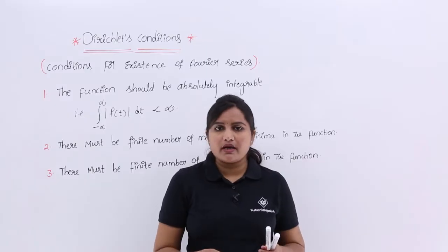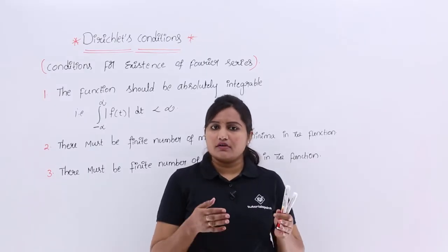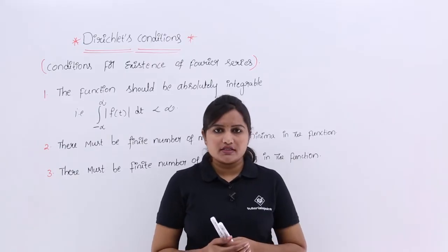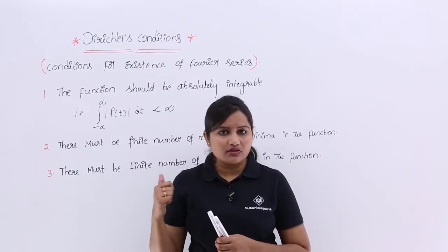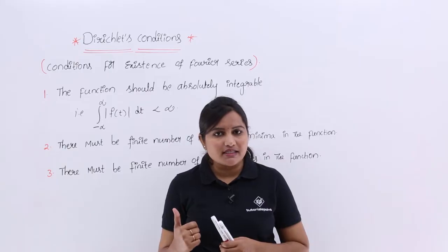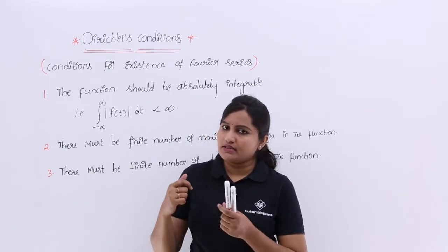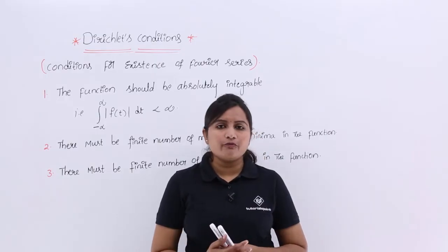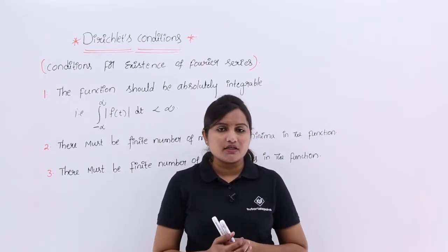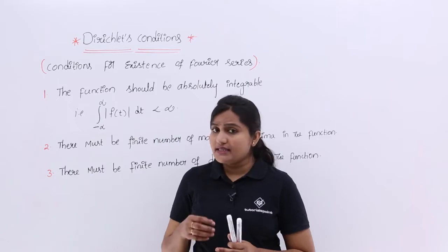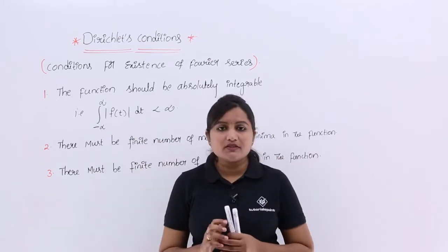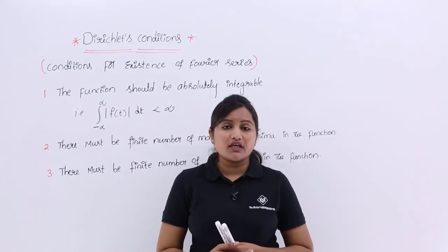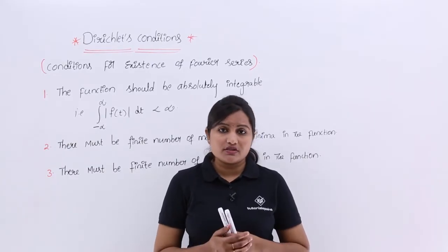You cannot waste your time just by trying to represent any signal in Fourier series. You need to check these three properties and confirm they are satisfied by the signal. After satisfying these three properties, you can go for Fourier series representation. Otherwise, if a signal is not valid for these three conditions, or is violating any one of them, you have a problem.